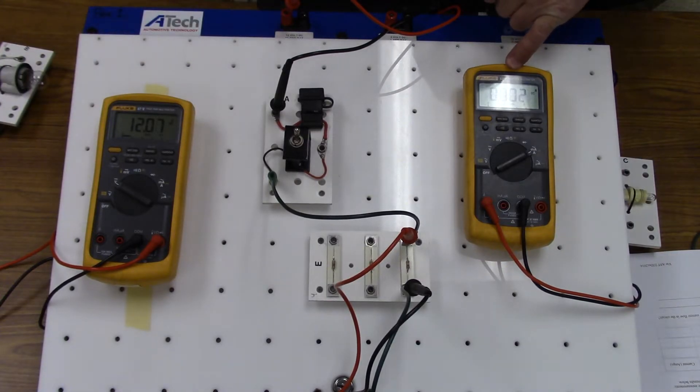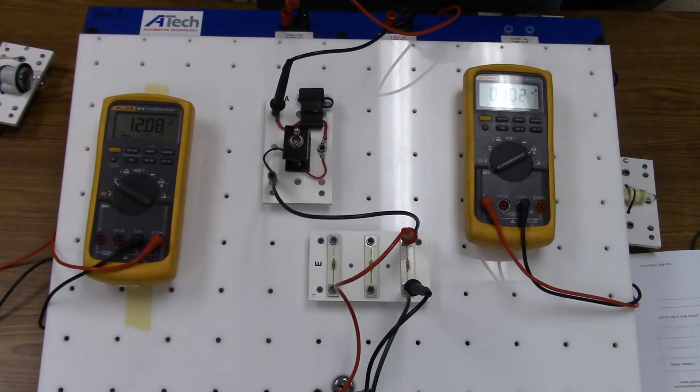And our current flow is .002 amps. Now we're down low enough where we're not getting a true accurate reading, so let's go to a lower scale.